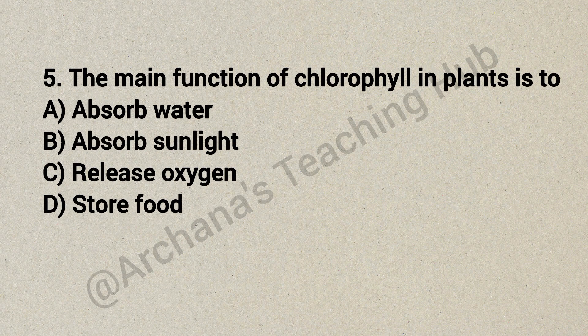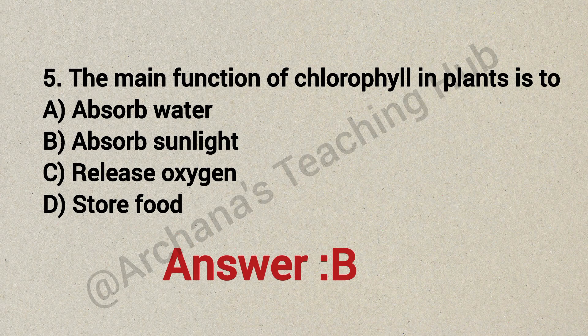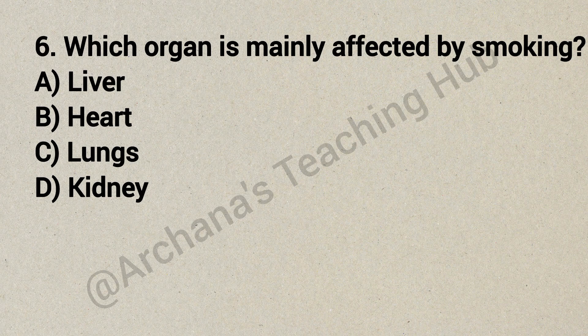Question 5: The main function of chlorophyll in plants is to — Option A: absorb water, Option B: absorb sunlight, Option C: release oxygen, Option D: store food. Correct answer is Option B: absorb sunlight. Question 6: Which organ is mainly affected by smoking? Option A: liver, Option B: heart, Option C: lungs, Option D: kidney. Correct answer is Option C: lungs.